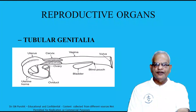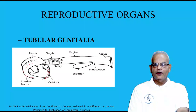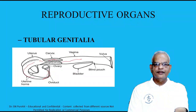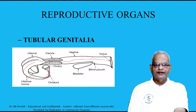The tubular genitalia include the fallopian tube — they are tube-like and hollow inside — then the uterine horns, the body of the uterus, the cervix, and then the vagina, coming up to the external genital organs.